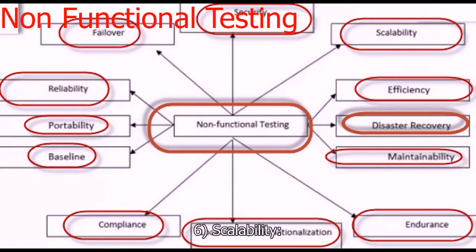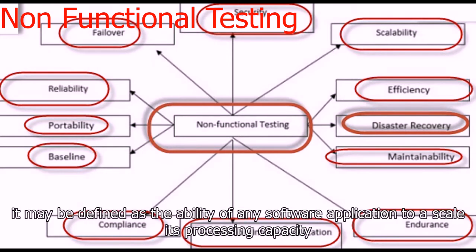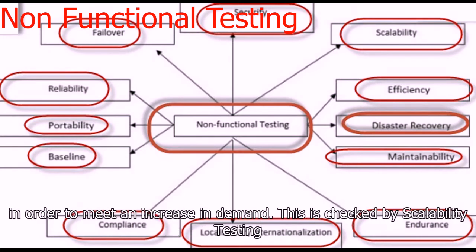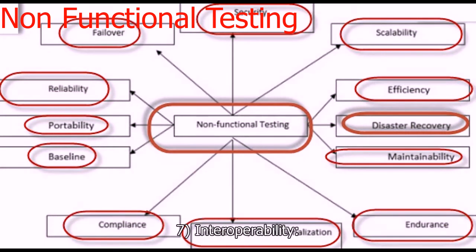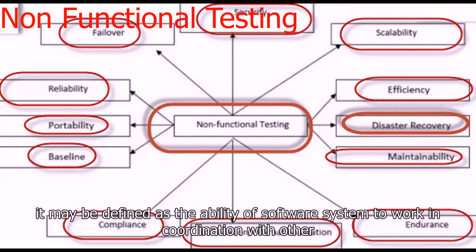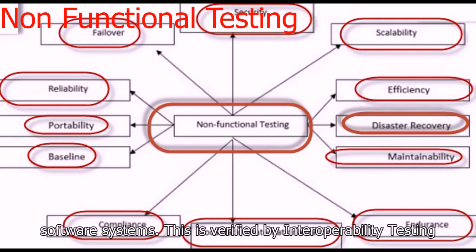Next comes scalability testing. It may be defined as the ability of a software application to scale its processing capacity in order to meet an increase in demand. This is checked by scalability testing. Next comes interoperability, which may be defined as the ability of a software system to work in coordination with other software systems. This is verified by interoperability testing.